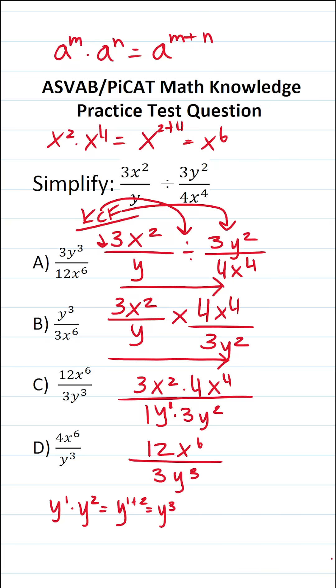Now this isn't the correct answer choice because we can simplify this further. 3 goes into 3 one time. 3 goes into 12 four times. So this becomes 4x to the sixth over y to the third power.